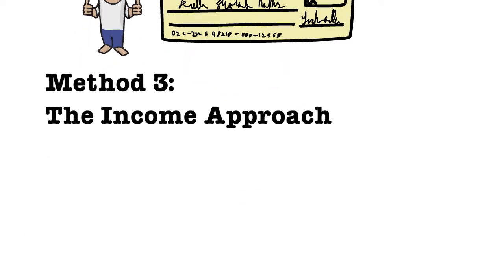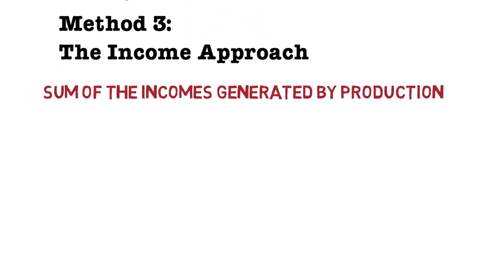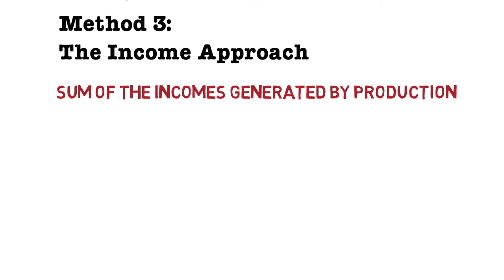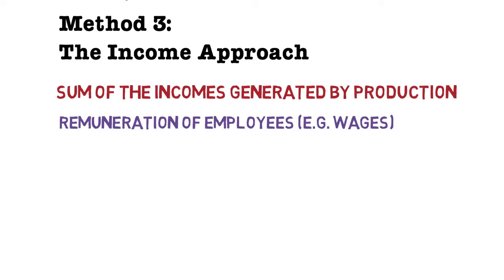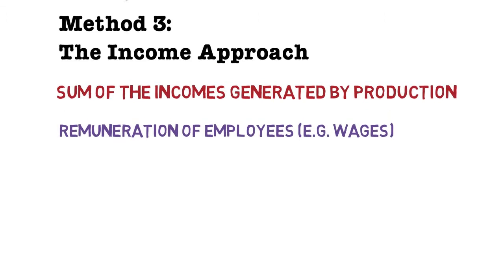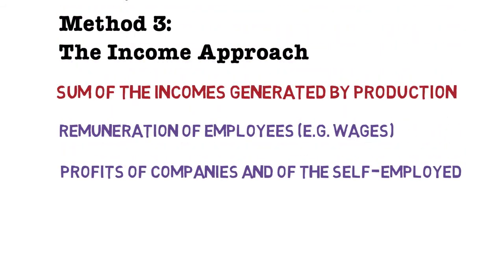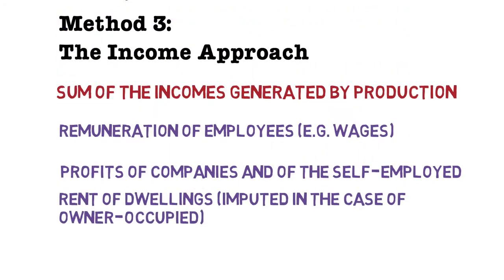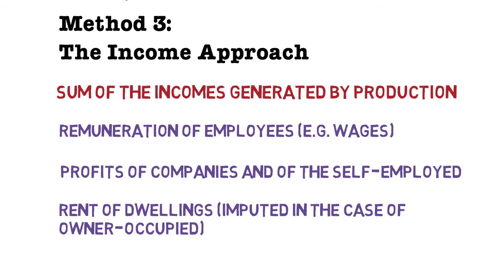A second one is profits earned by companies, firms, and the self-employed, so we can add this into our income. And finally, also the rent of dwellings, so these would be imputed in the case of owner-occupied, and these rents would be added up to that income approach as well.